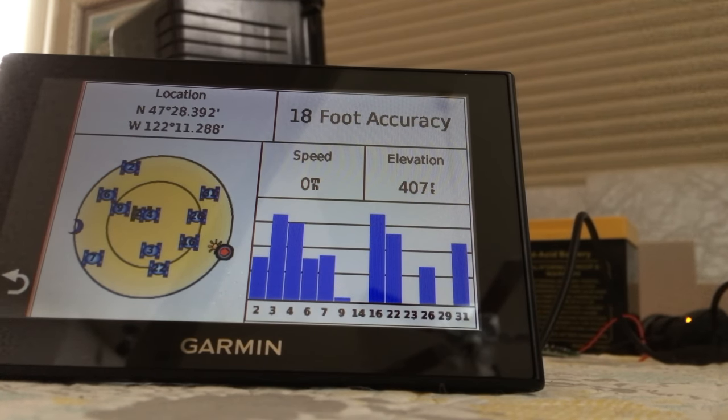There's currently 31 satellites orbiting the Earth. You can see a graphical depiction of this orbital arrangement to the left of the bars.